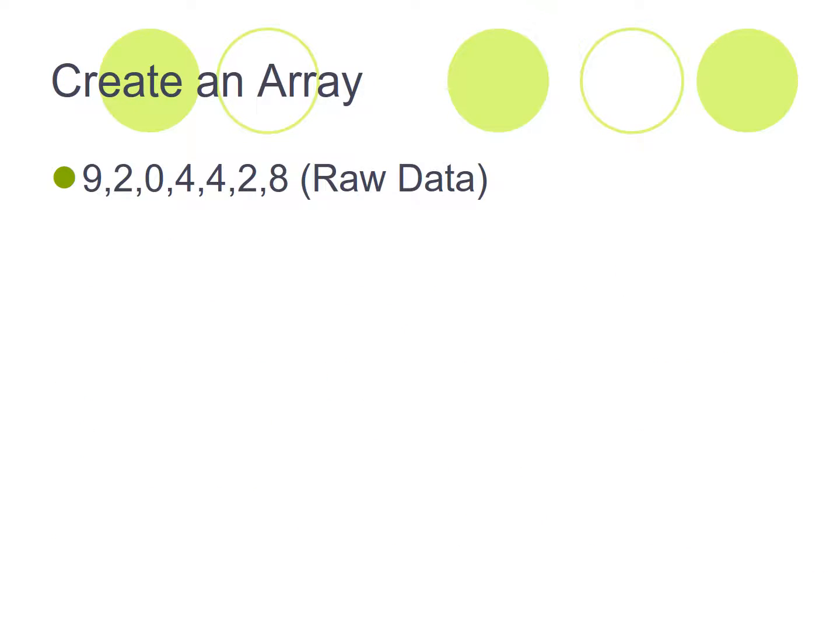Okay, so for example create an array of that raw data, hit pause and give it a try. And there's an array. All we've done is put it in order. So the 0 is first, then there are two 2's, then there are 2 4's, then there's an 8 and there's a 9. And you can see it's gradually getting bigger. So an array is just your raw data put in order.